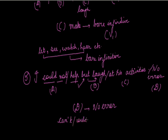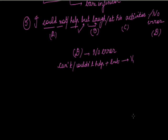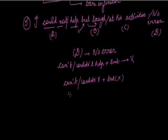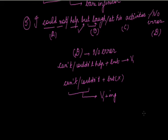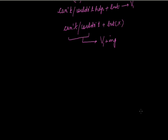To repeat: if 'can't help' or 'couldn't help' takes 'but' with it, use bare infinitive. But if 'but' is not used, then instead of bare infinitive, you will use V1+ing — that is, the gerund form.